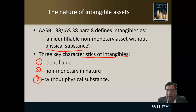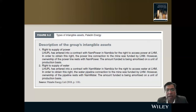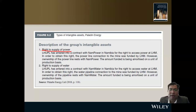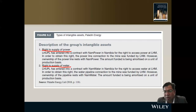An example is Paladin Energy, which has two types of intangible assets: the right to supply power and the right to supply water. In Dubai, only DEWA — Dubai Electricity and Water Authority — has the right to supply power, so that right is a single entity's intangible asset.